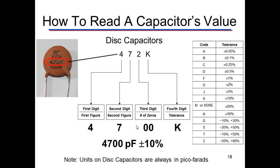On a disk capacitor, this is how you read it. There is a number — three digits and a letter — printed. The first number is the first digit, seven is the second digit, then the two is the number of zeros. So that's 4, 7, 0, 0. The fourth character gives you a tolerance — K is plus or minus 10%. These capacitors always have units of picofarads. So this is 4,700 picofarads plus or minus 10%. So let's look at another example.